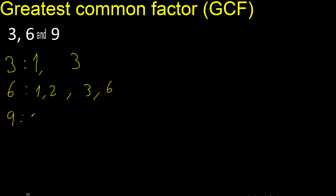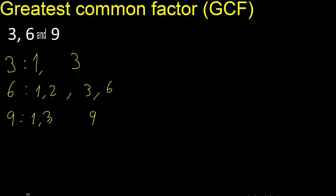9 divided by 1 is 9. Next, 6 divided by 2 — 9 cannot be divided by 2. Next 3, divided by 3 is 3. 3 is here. Factors.